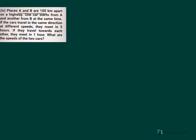Places A and B are 100 kilometers apart on a highway. One car starts from A and another from B at the same time. If the cars travel in the same direction at different speeds, they meet in 5 hours. If they travel towards each other, they meet in 1 hour. What are the speeds of the two cars?